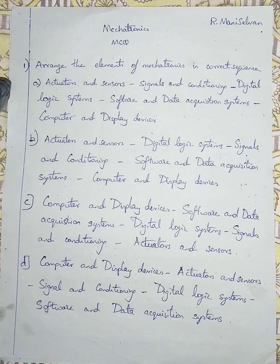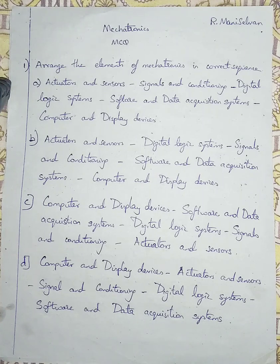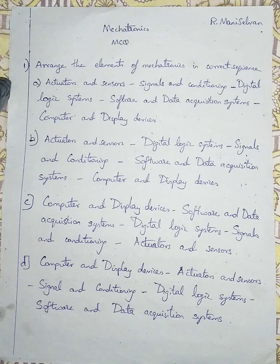Option B is given as actuators and sensors, digital logic systems, software and data acquisition systems, computer and display devices. Option C is given as computer and display devices, software and data acquisition systems, digital logic systems, signals and conditioning, actuators and sensors. Option D is given as computer and display devices, actuators and sensors, signals and conditioning, digital logic systems, software and data acquisition systems.